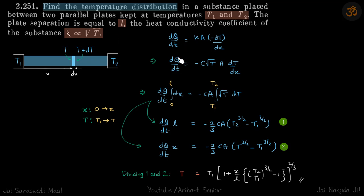dQ/dt is equal to kA times minus dT/dx. Since k is varying, we take an element where we can assume T to be constant. At a distance x, k will be c times root T — we are just taking c to be a constant.